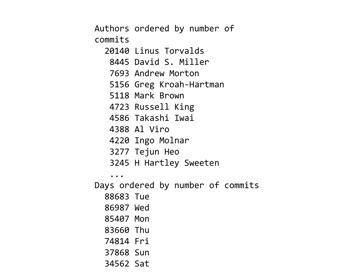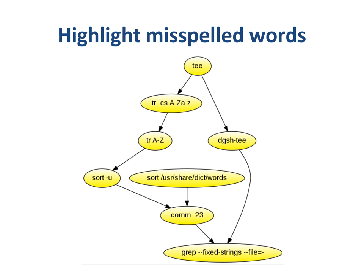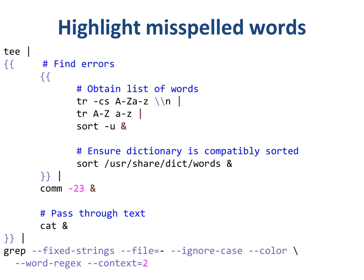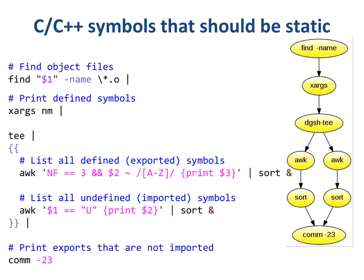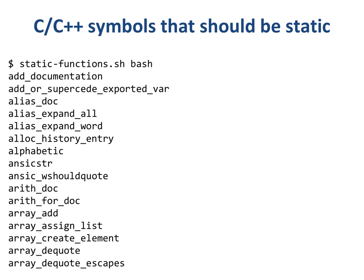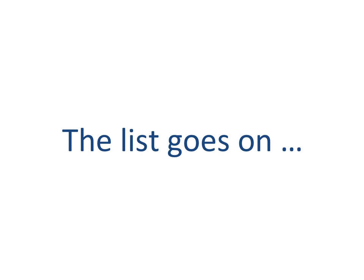Here is the result of running the program on the Linux kernel. To highlight misspelled words the original text is combined with the misspelled words. This is done by nesting multipipe blocks. Here is an example of the command's output. You can find C and C++ identifiers that should have been declared static by looking at those that have been exported and never used. This is what I get when I run this program on the bash object files. The list of possible applications goes on and on.